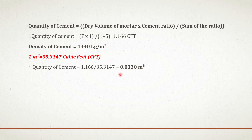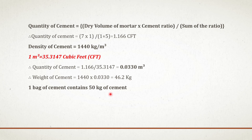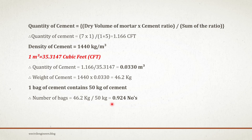Now we know the volume of cement and the density of cement. Multiplying these two values gives the weight of cement: 1440 multiplied by 0.033 equals 46.2 kg. Since one bag of cement contains 50 kg, number of bags equals to 46.2 divided by 50, which equals 0.924 — approximately one bag of cement.